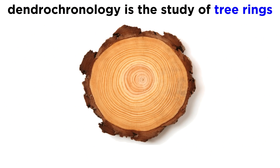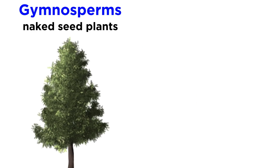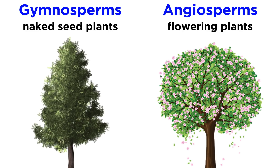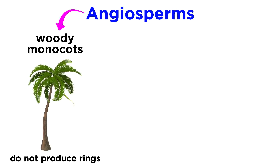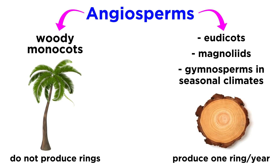Since dendrochronology is the study of the growth of tree rings, we are only concerned here with woody plants, specifically gymnosperms and angiosperms. Recall that gymnosperms are plants which produce naked seeds, like the cone-bearing pines, while angiosperms are flowering plants. Within the angiosperms, woody monocots like palm trees do not produce annual rings and are not studied in dendrochronology. However, eudicots and magnoliids, as well as many gymnosperms found in seasonal climates, produce one ring of growth every year — and it is this ring that is so essential to dendrochronologists.